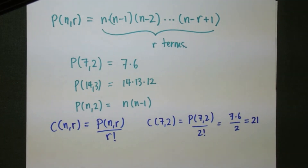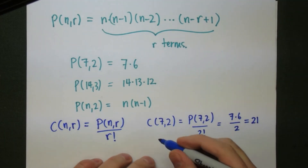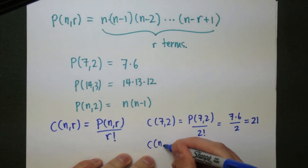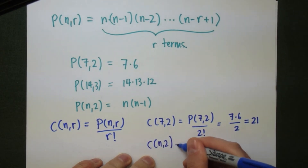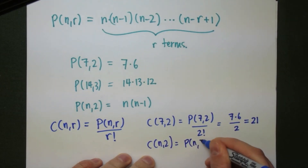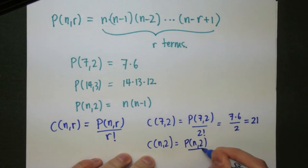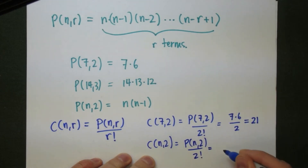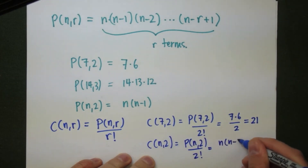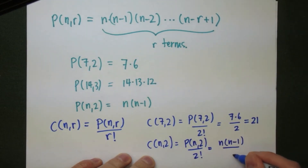A little more abstractly, let's take a look at C(n,2). This will be the number of ways to choose two out of n objects, so that's P(n,2) divided by 2 factorial, or n times n minus 1, all divided by 2.